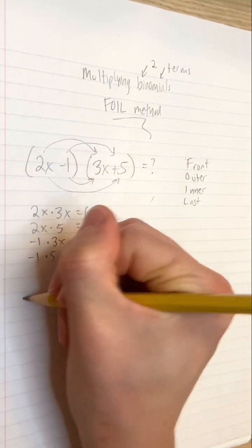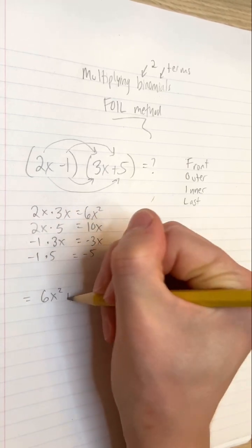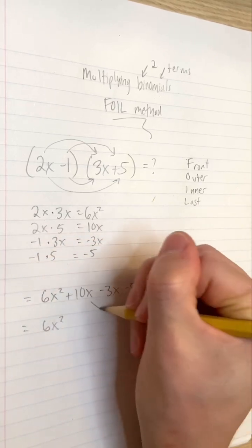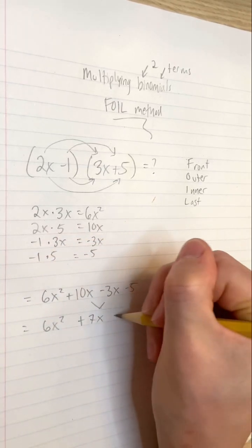Once we add all of these products together, we have 6x squared plus 10x minus 3x minus 5. Combining like terms, our final simplified product is 6x squared plus 7x minus 5.